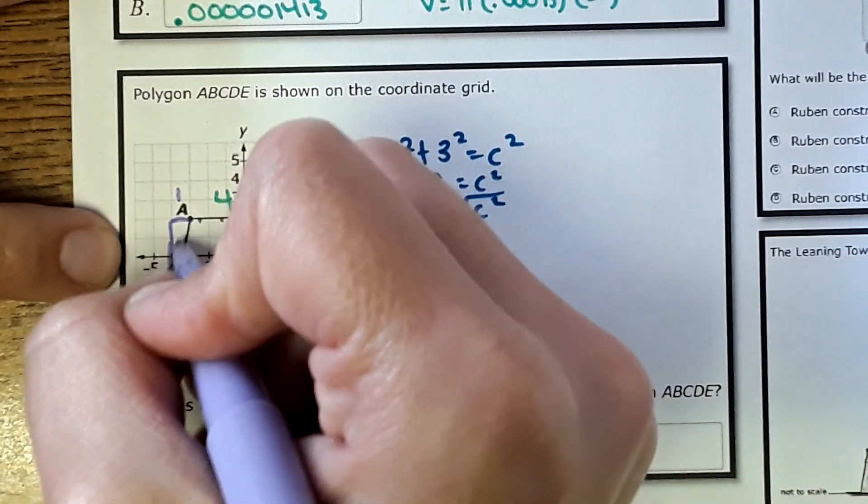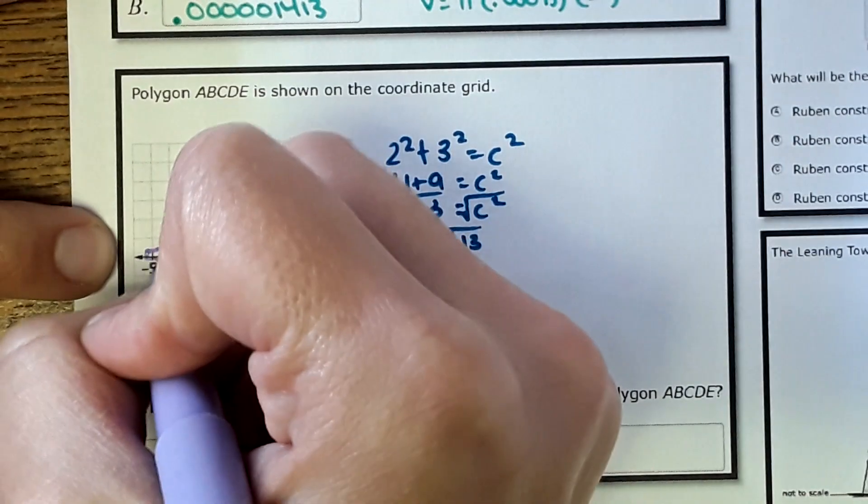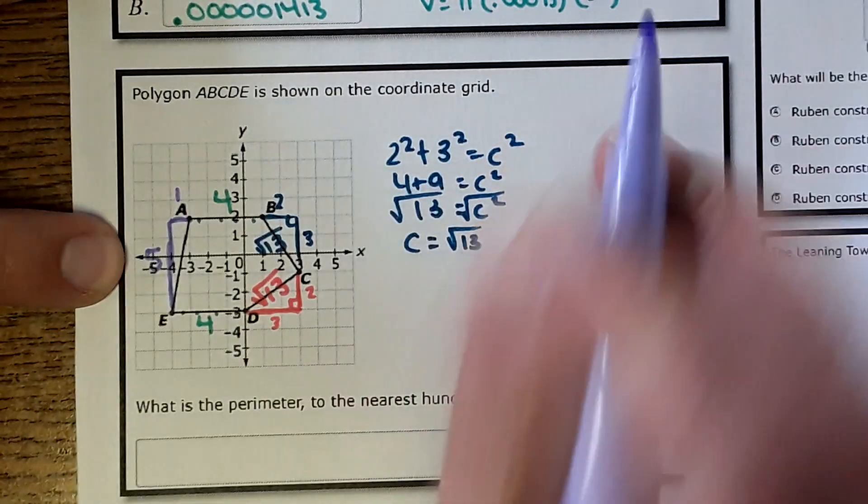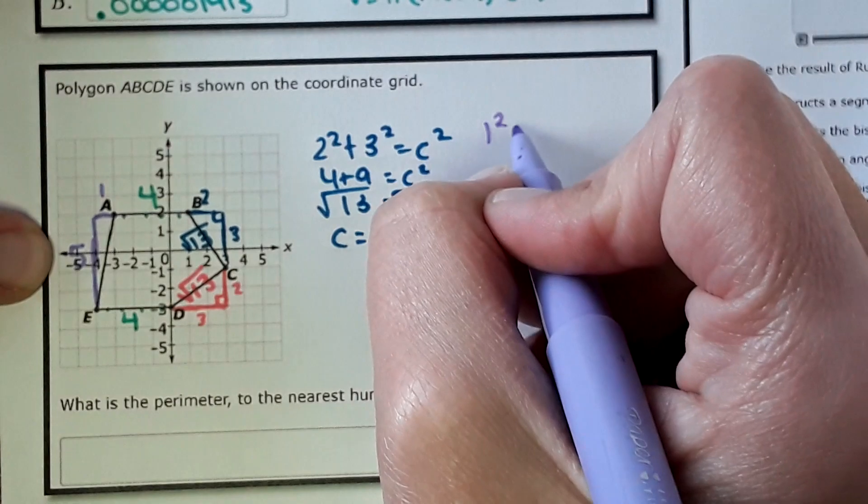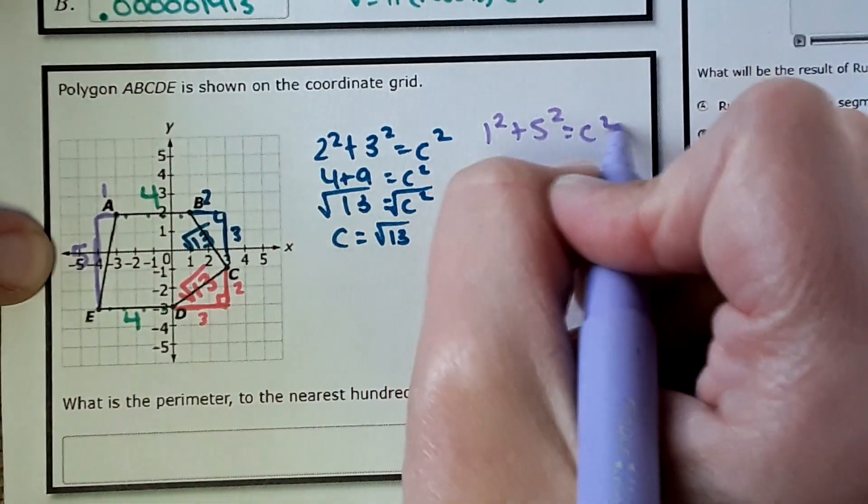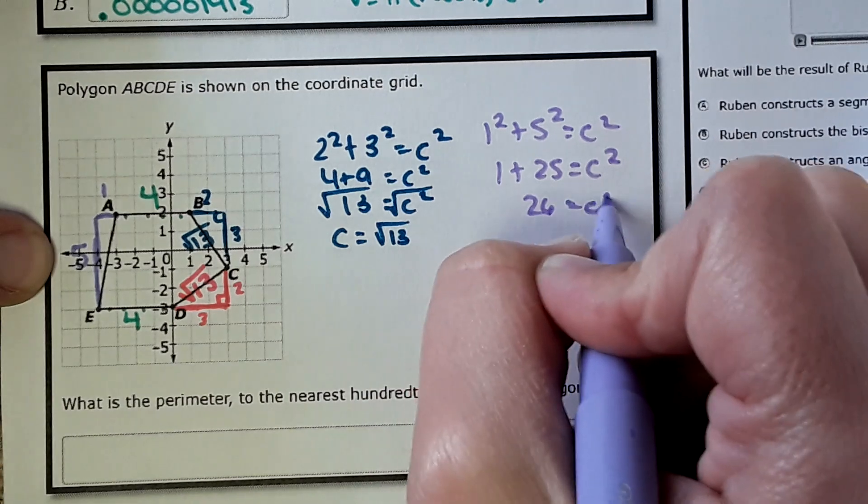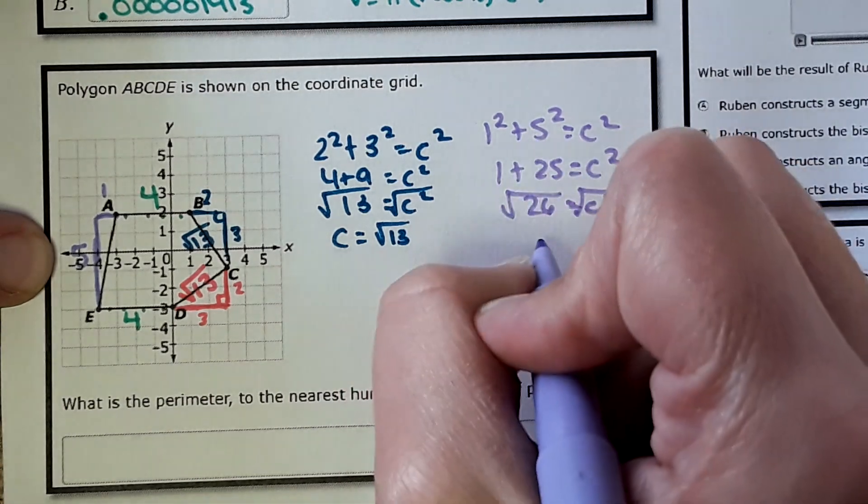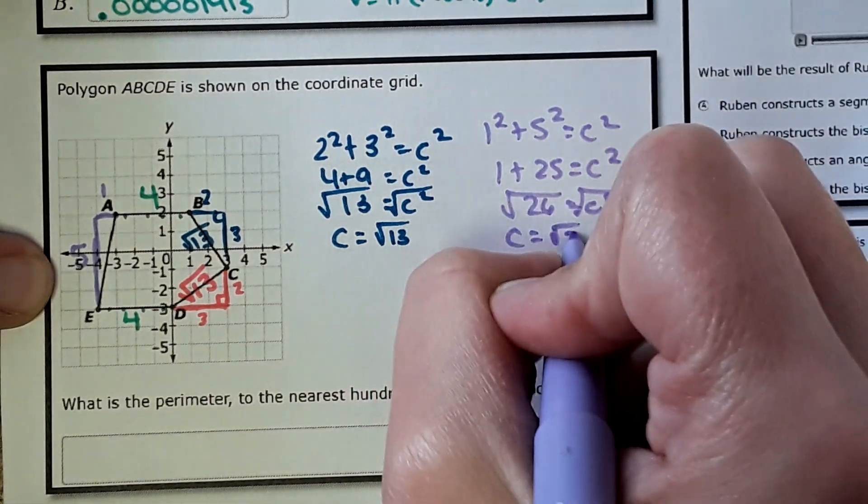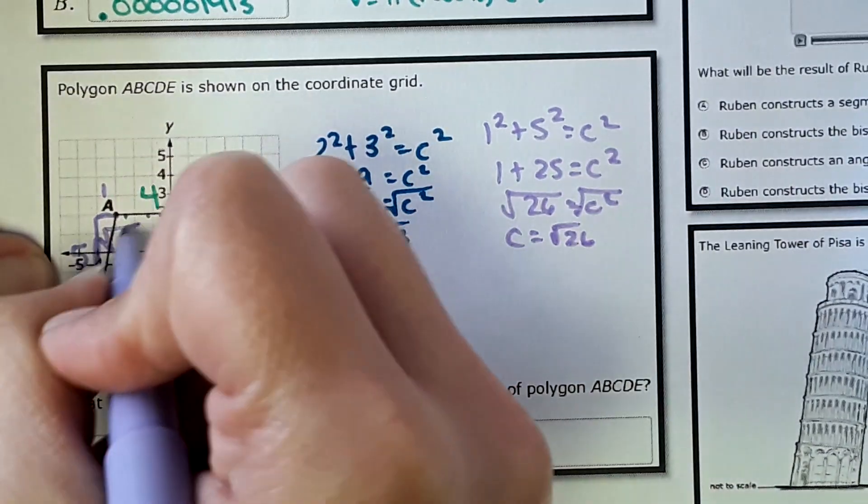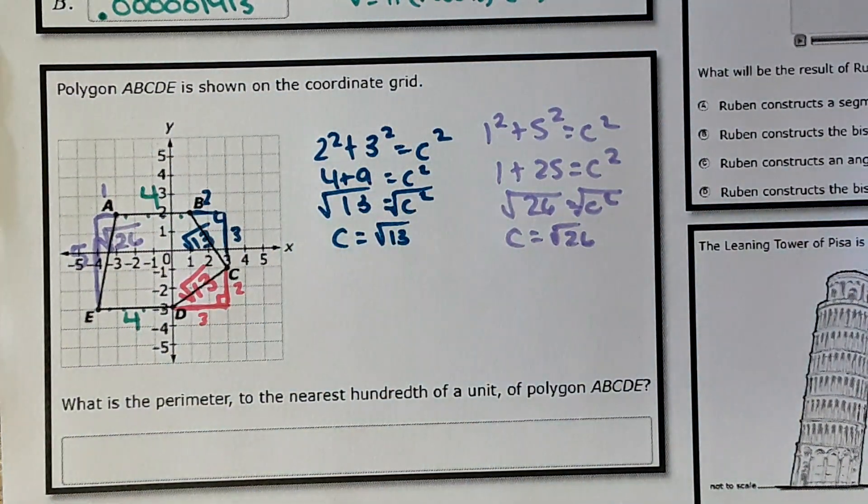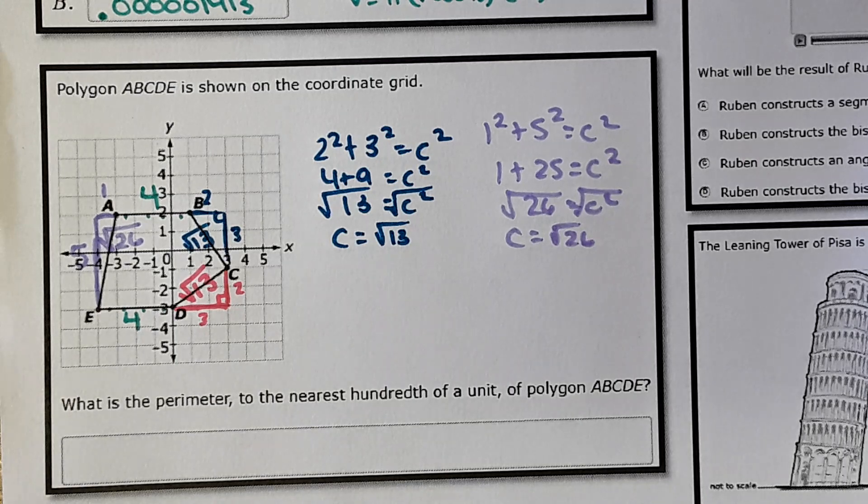And then over here to find this length. This right triangle, 1 by 1, 2, 3, 4, 5 units. So 1 squared plus 5 squared equals C squared. And I get square root of 26.